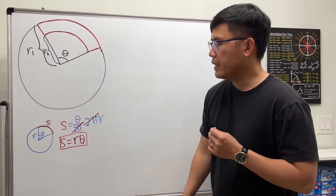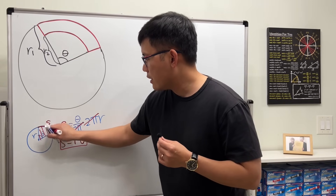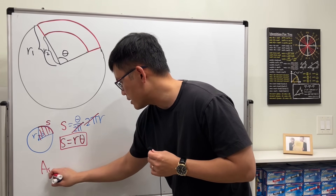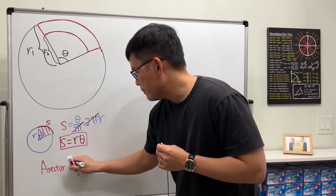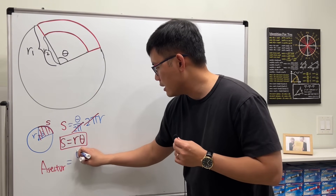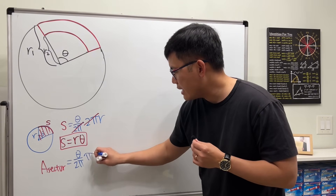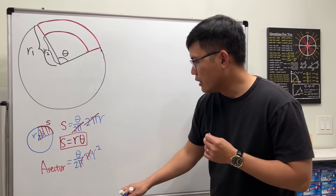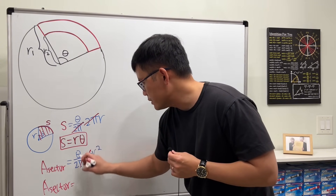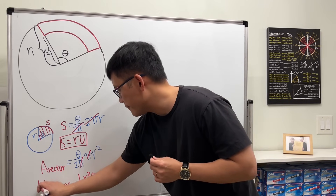The second thing is the area of the sector. It's the same idea — it's a portion of the whole circle, specifically theta over 2π times the full circle area πr². The π's cancel, giving us: area of the sector equals one-half r² times theta.